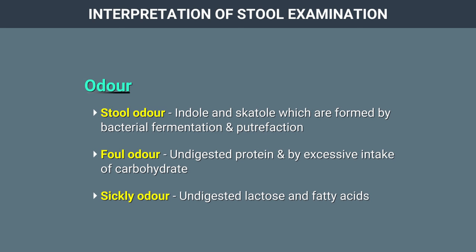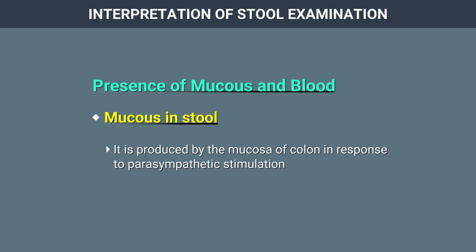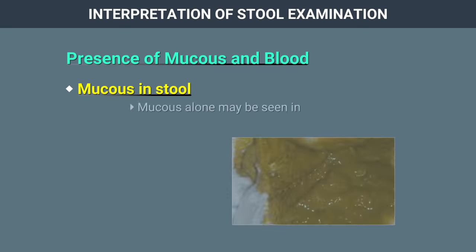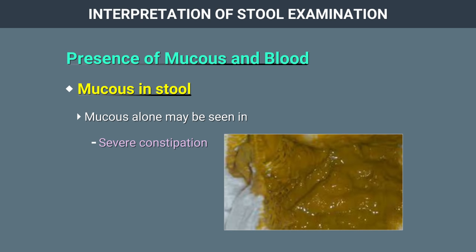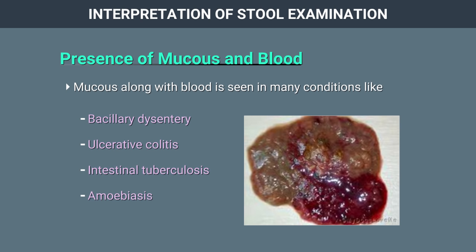A sickly odour is produced by undigested lactose and fatty acids. Presence of mucus and blood: mucus is produced by the mucosa of the colon in response to parasympathetic stimulation. Mucus is a translucent gelatinous material clinging to the surface of stool. Mucus alone may be seen in severe constipation or mucus colitis. Mucus along with blood is seen in many conditions like bacillary dysentery, ulcerative colitis, intestinal tuberculosis, amoebiasis, enteritis, etc.